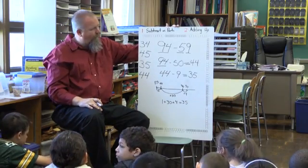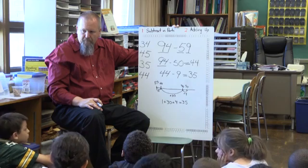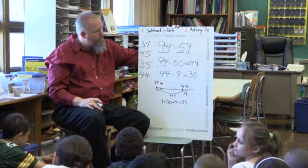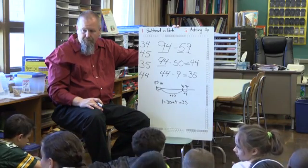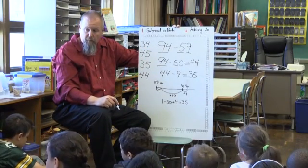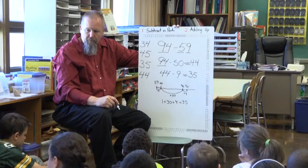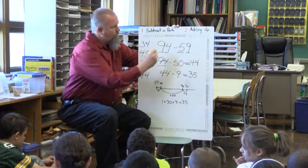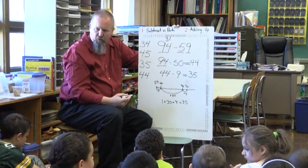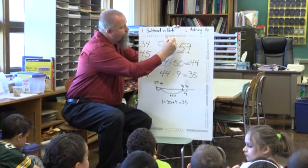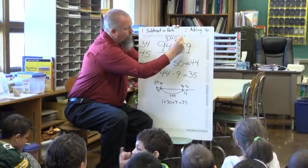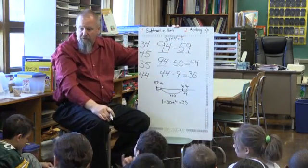Jacob, one more way. I remember the last problem was 90 minus 59 and that equals 31. Now the 90 turned into a 94, so I decided to add 4 on — so 31 plus 4 equals 35. He used his prior knowledge to help him solve the new problem.